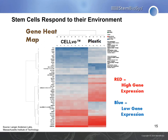When you put cells onto a foreign environment, you can expect them to change. When you seed cells onto Selvo matrix versus tissue culture plastic, you're going to see very different gene expression. What we've observed consistently is that when cells are seeded onto tissue culture plastic, they immediately upregulate the structural and matricellular proteins that they're not seeing. For instance, if you seed a mesenchymal stem cell onto a fibronectin matrix, they may be expecting to see a whole bunch of different collagens, and they're going to start expressing those.